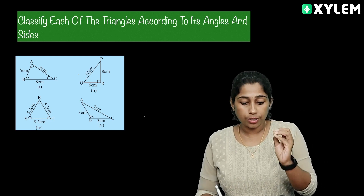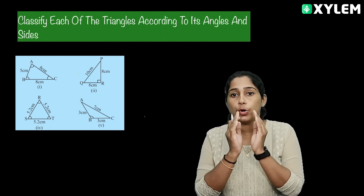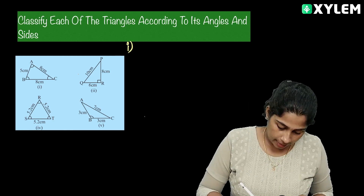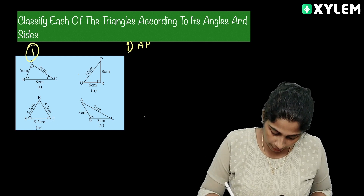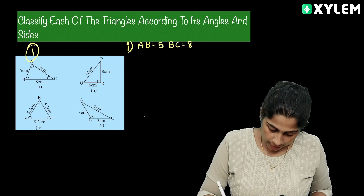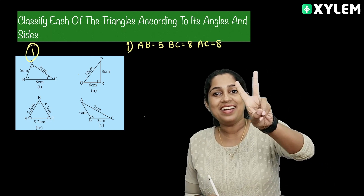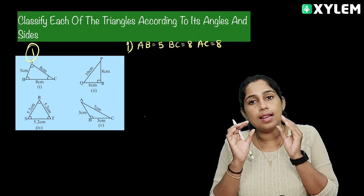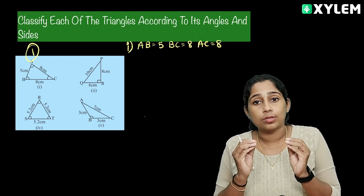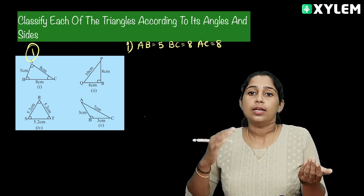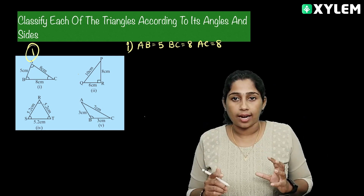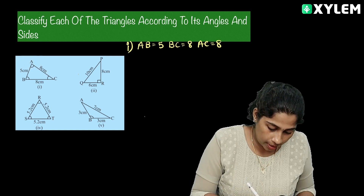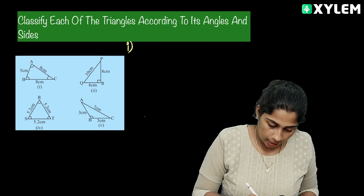Let's classify each triangle according to its angles and sides. Triangle ABC: AB equals 5, BC equals 8, AC equals 8. Two sides are equal, so it's Isosceles. The angles — this is a right angle. So it's an Isosceles Acute Angle Triangle.